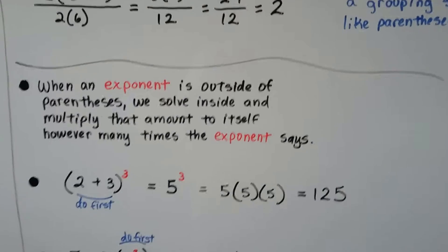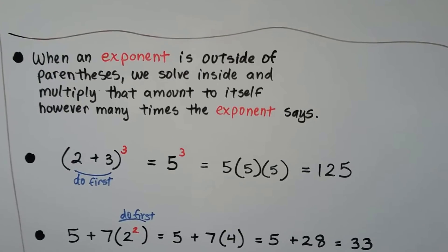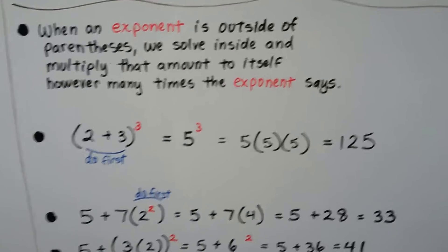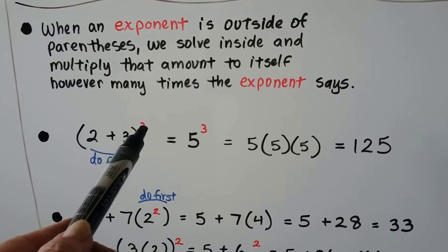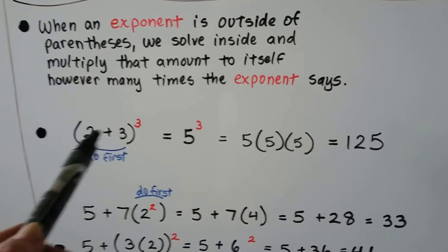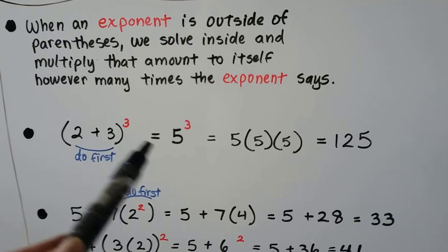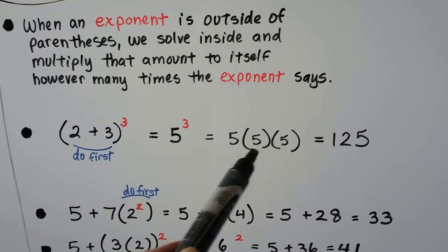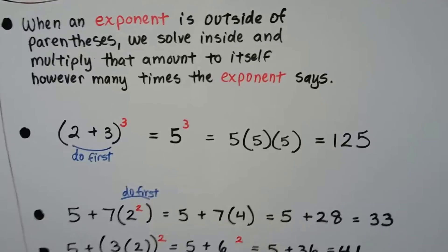When an exponent is outside of parentheses, we solve inside first and then multiply that result by itself however many times the exponent indicates. So because this exponent of 3 is on the outside of the parentheses, we do the inside first and get 5, and it's to the third power — that means 5 times 5 times 5. 5 times 5 is 25; 25 times 5 is 125.